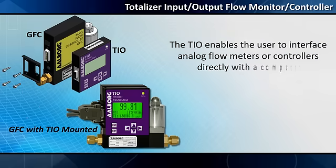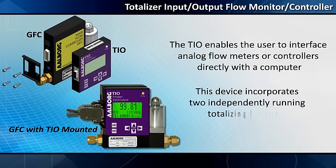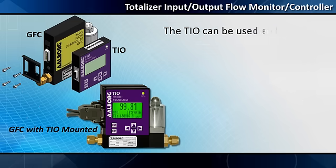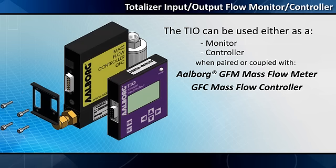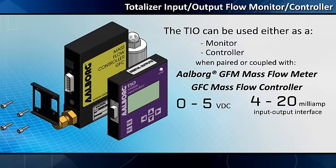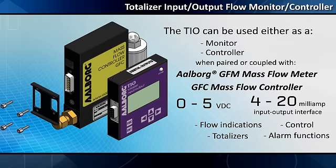The TIO enables a user to interface analog flow meters or controllers directly with a computer. In addition, this device incorporates two independently running totalizing functions. The TIO can be used either as a monitor or a controller when paired with an Alicat GFM mass flow meter or GFC mass flow controller, and it is equally as versatile with any third-party device equipped with a 0 to 5 VDC and/or a 4 to 20 milliamp input-output interface where flow indications, control, and totalizer or alarm functions are required.